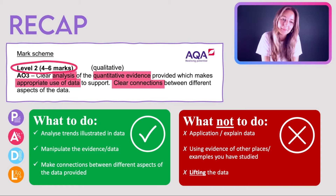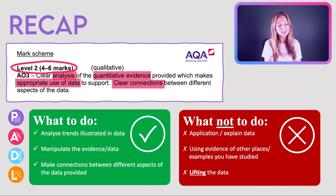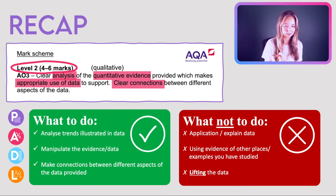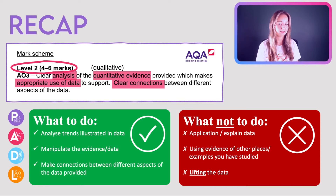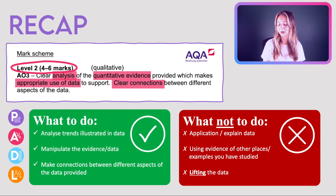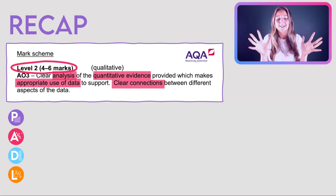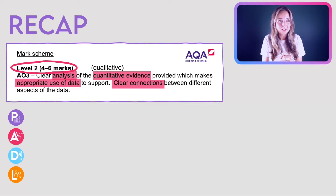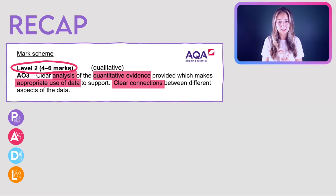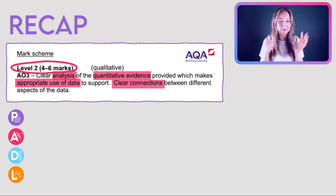To recap — use PADDLE: analyze the trends illustrated in the data, manipulate the data and evidence, make connections between different aspects of the data provided. What not to do: do not explain, do not apply extra knowledge, do not use evidence from other places or case studies you've studied, and do not simply lift the data. All the data I found is from populationpyramid.net or Our World in Data — I'll put links below. Good luck, and let me know if you have any questions in the comments.